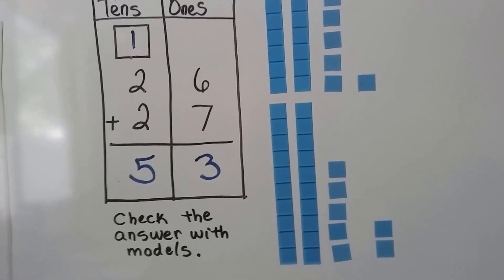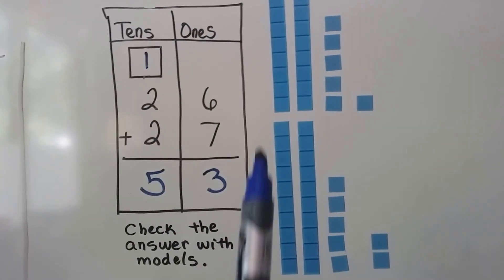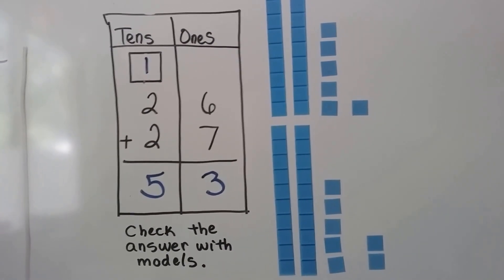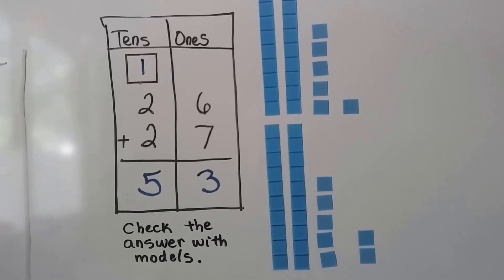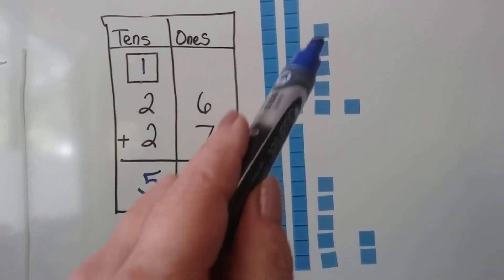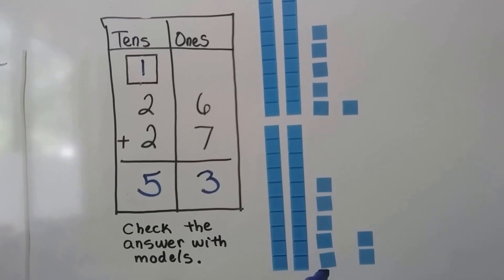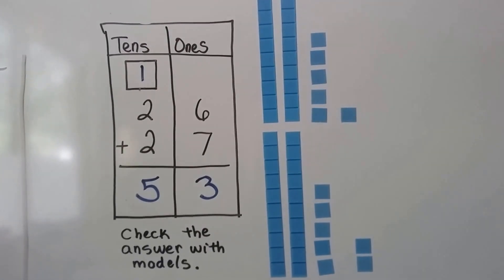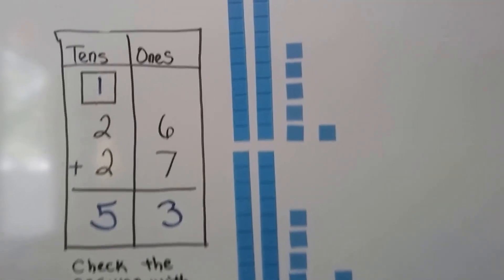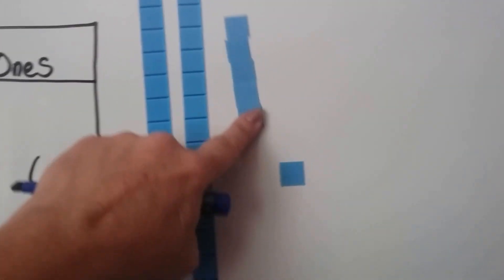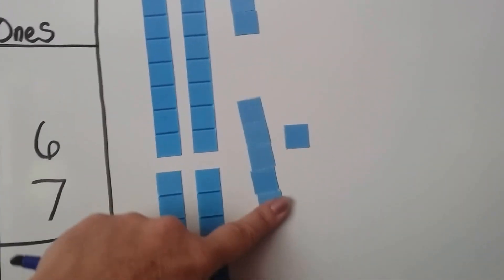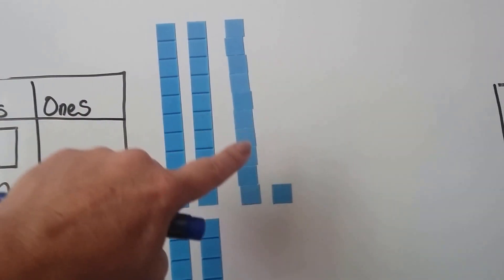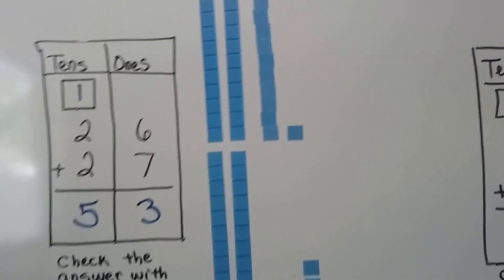We can check this with models. 26 is 2 tens and 6 ones. 27 is 2 tens and 7 ones. We can move this 5 with this 5 because 5 plus 5 equals 10 and make another long of 10. We move this one up and we move this one up. That 5 and that 5 made another long of 10.